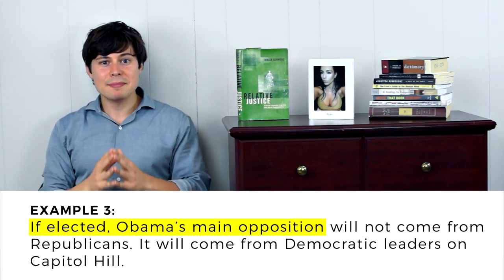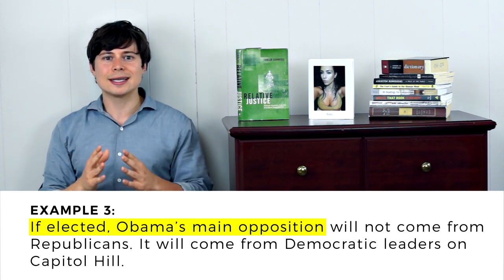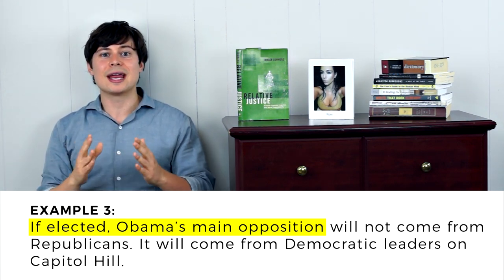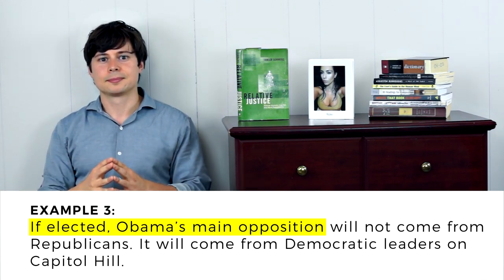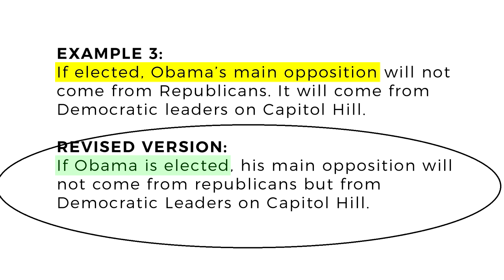Now, we know what Brooks means, of course, but we have this rule for a reason. Removing dangling modifiers eliminates ambiguity and clutter. Here's the revised version: 'If Obama is elected, his main opposition will not come from Republicans, but from Democratic leaders on Capitol Hill.' There we go.